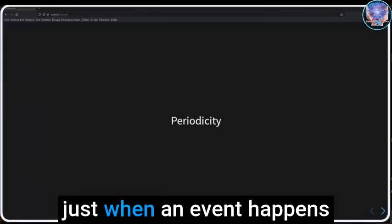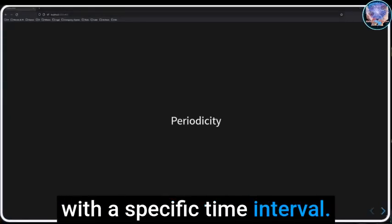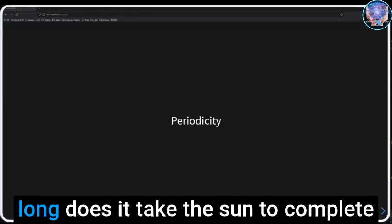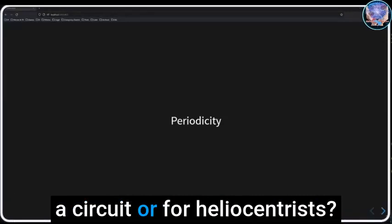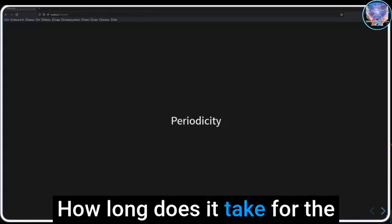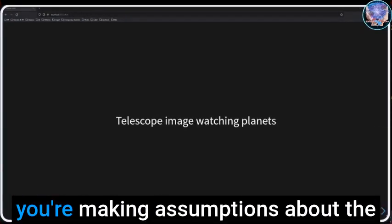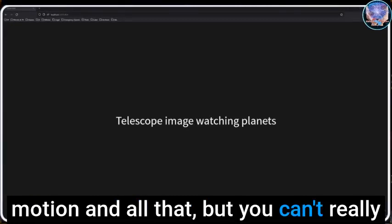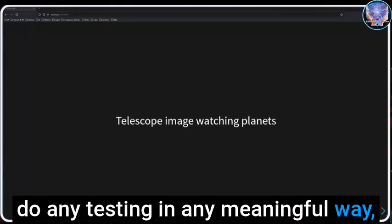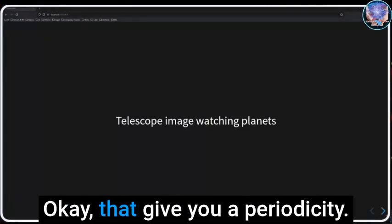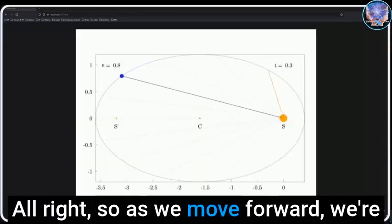All right, we have periodicity, which is just when an event happens with a specific time interval. An example of that would be how long does it take the sun to complete a circuit, or for heliocentrists, how long does it take for the earth to revolve around the sun. You're just making measurements and making assumptions about the motion, but you can't really do any testing in any meaningful way.